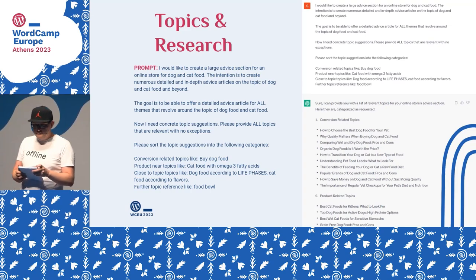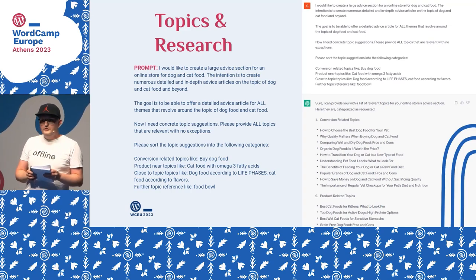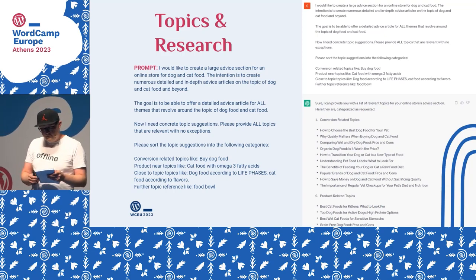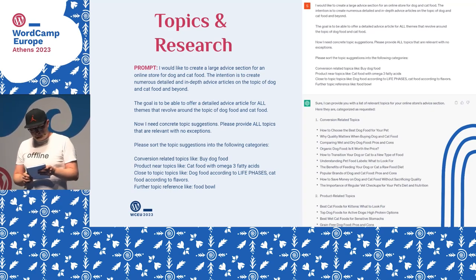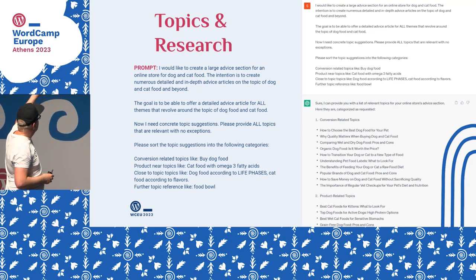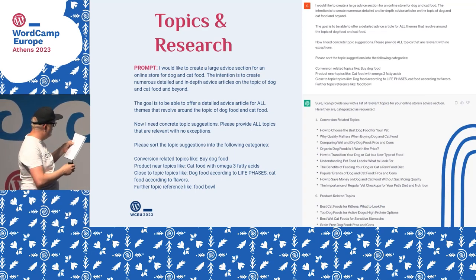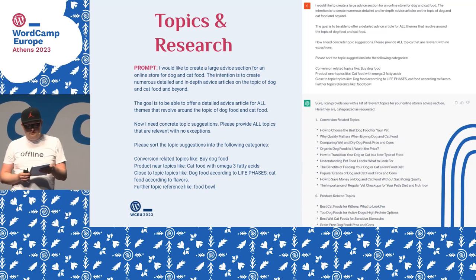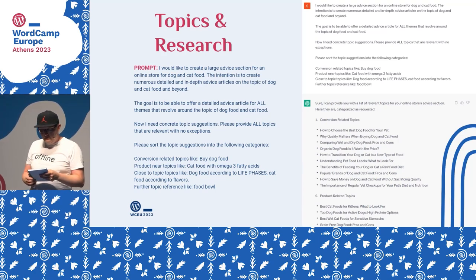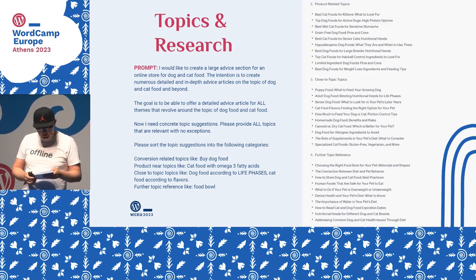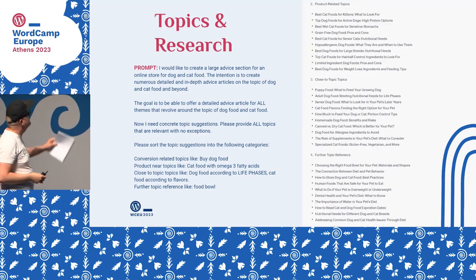My expectation: I need concrete topic suggestions. As an example, I give ChatGPT the following instruction: sort the topic suggestions into the following categories — conversion-related topics, product-near topics, close-to-the-topic topics, and future-topics reference.